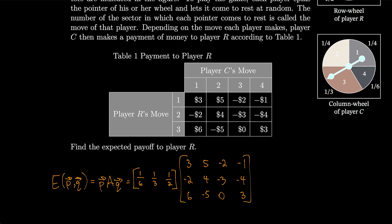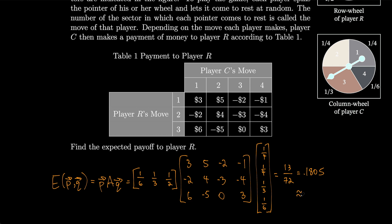Multiplying these matrices using a calculator, we get 13/72, which is equal to approximately 0.1805. So that means the expected payoff to player R is approximately 18 cents per play.